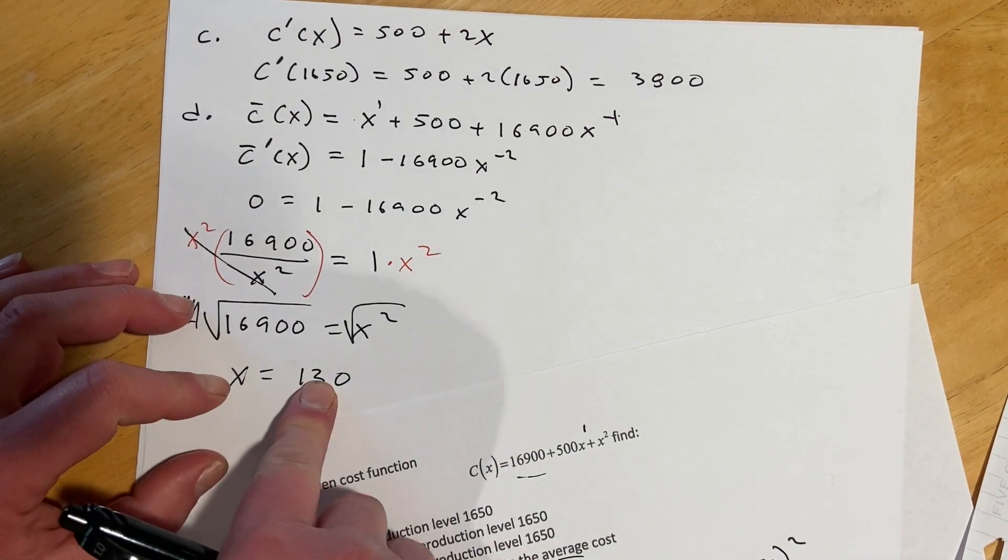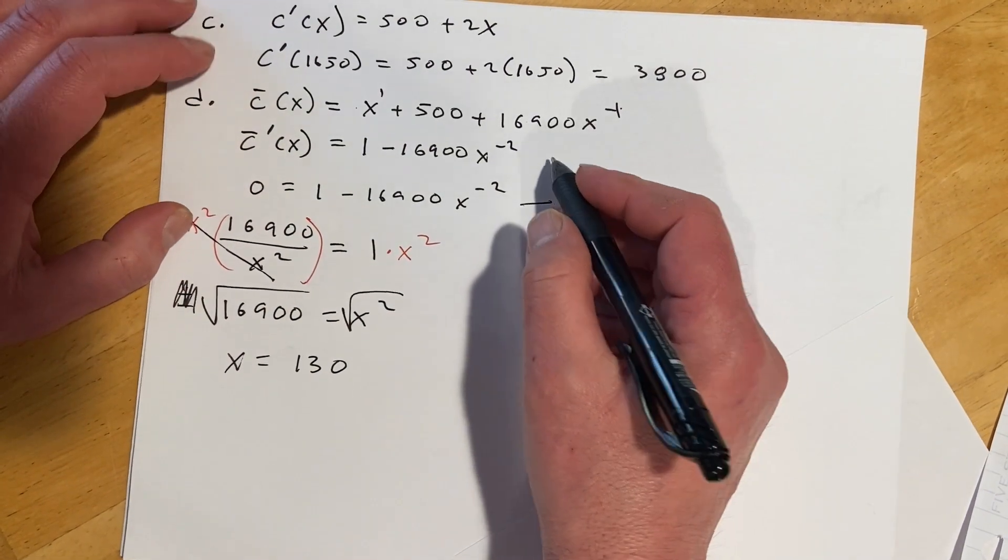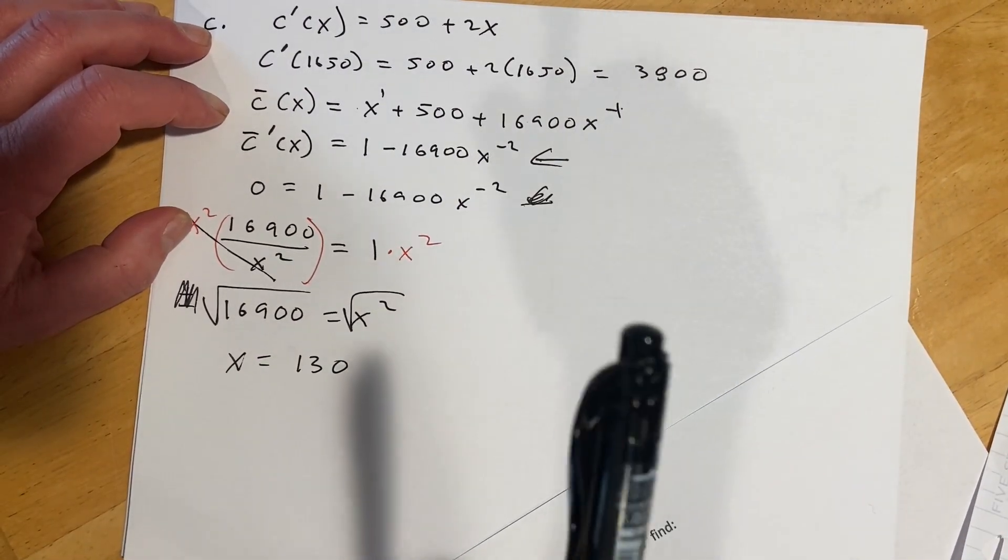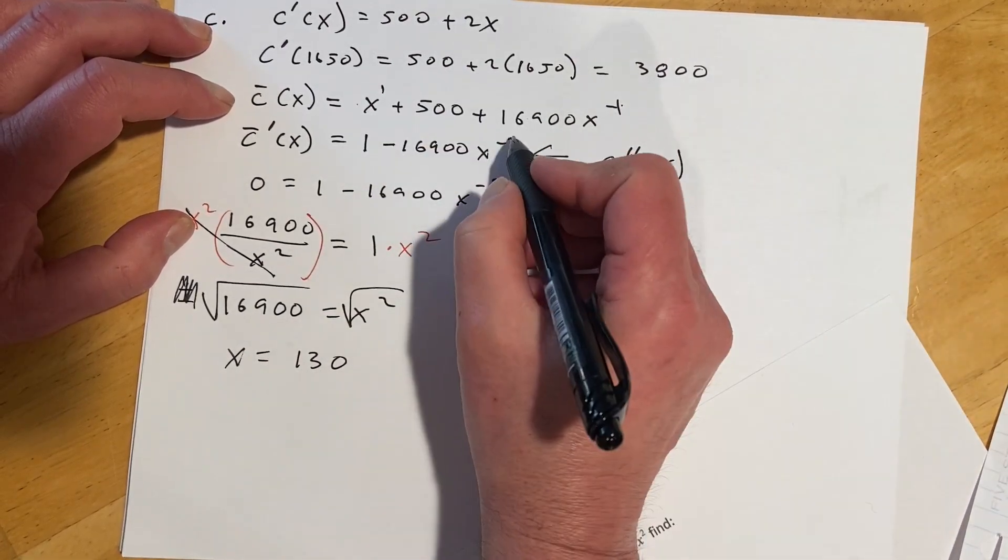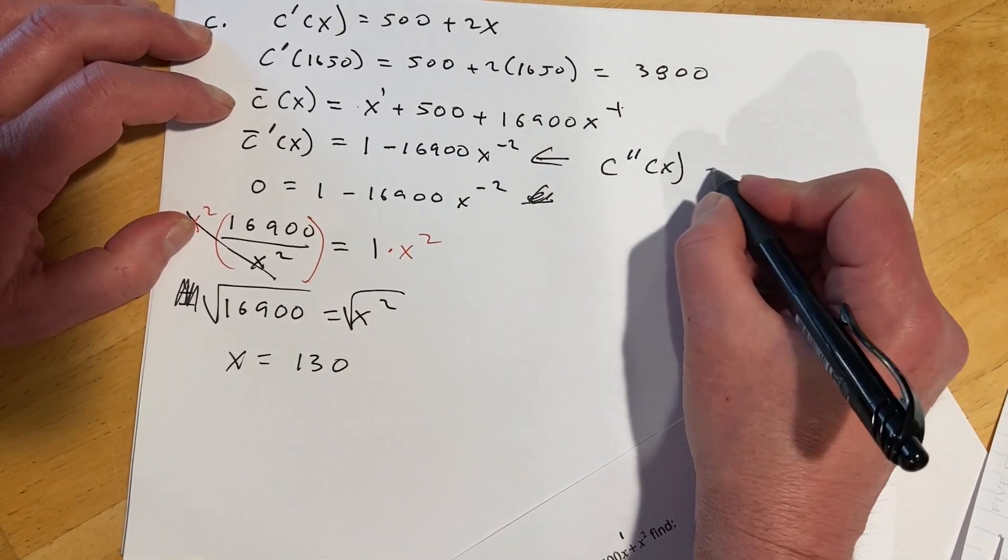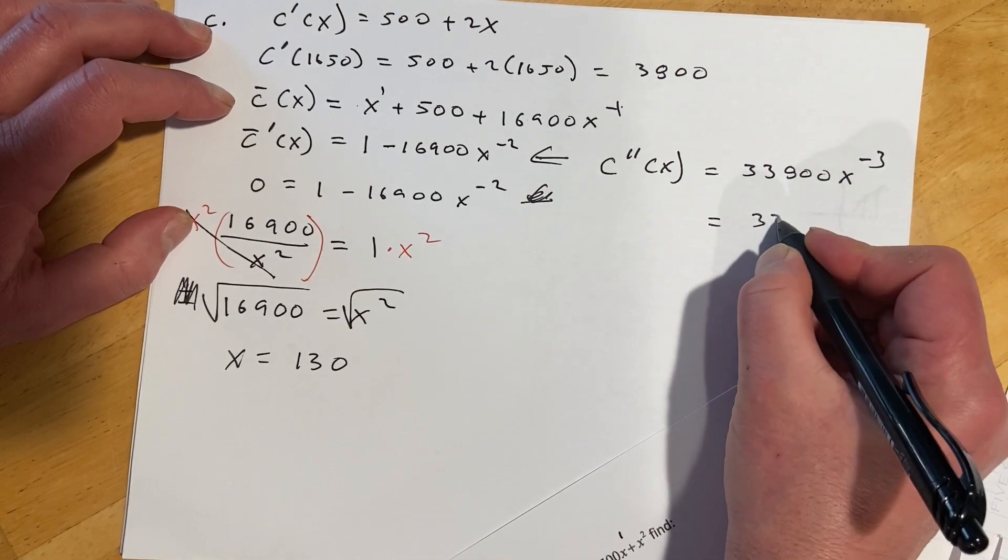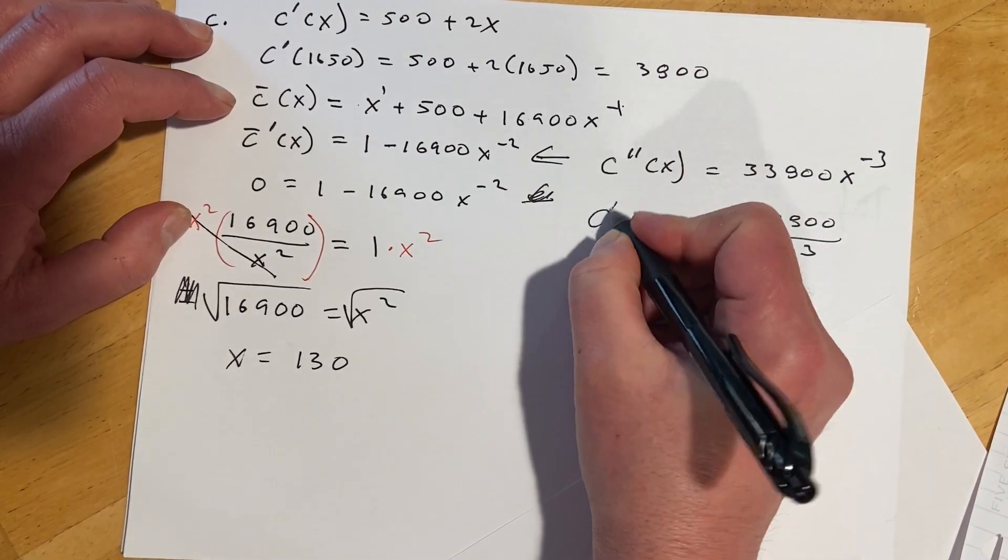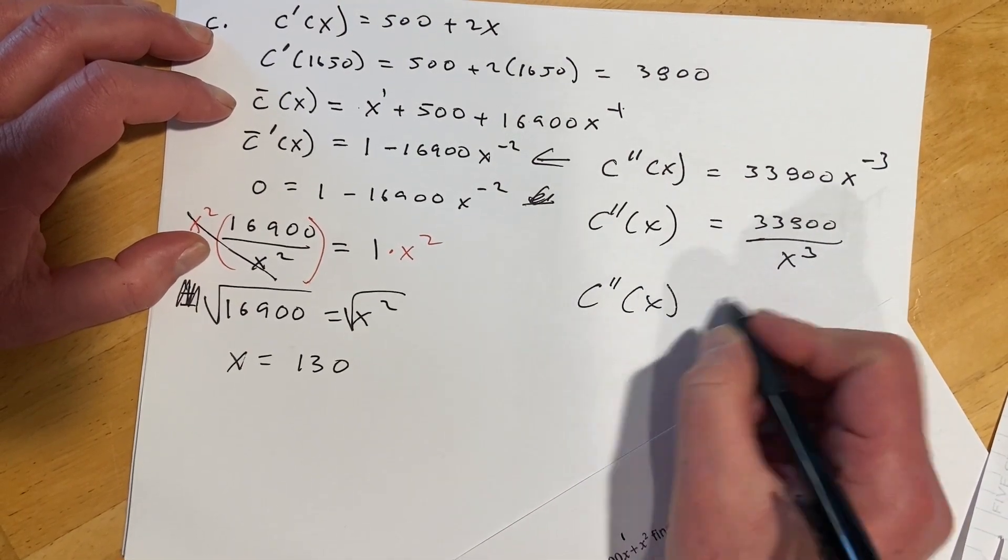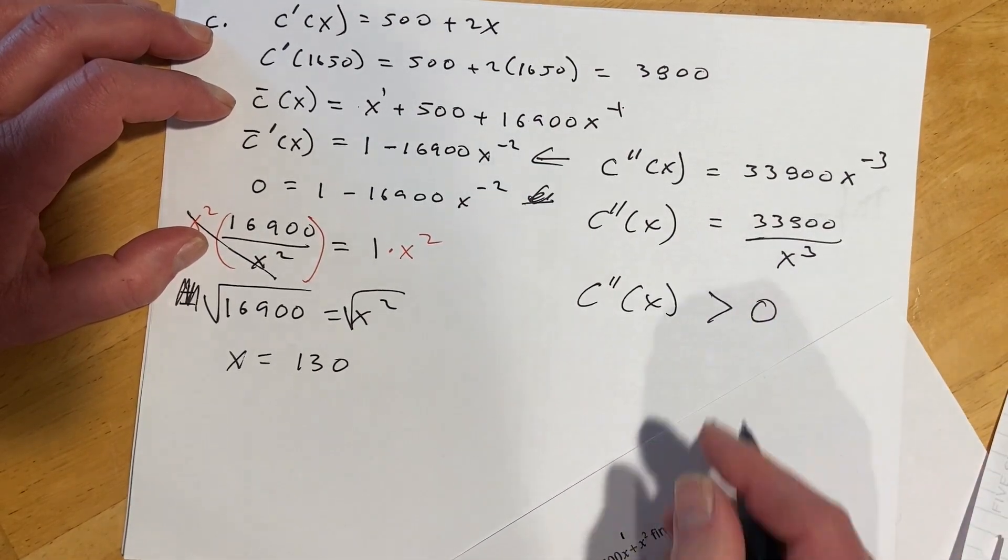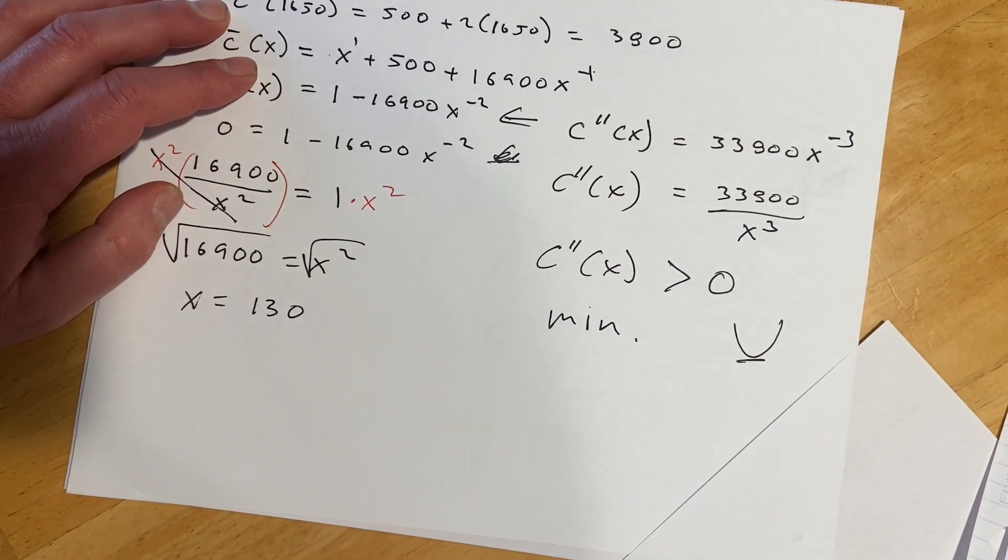And so then the other thing is, so great, I found this is a turning point on the graph. But it could be a min or it could be a max. So I need to do the second derivative test right here, right there. And then see if I have a maximum or a minimum. So taking my second derivative, the 1 would drop out. Negative 2 times negative will make positive. And then 2 times that value comes out to 33,800. And then take another one off the exponent, and that gets us to X to the negative 3. Or you can think of this as this. And that's our second derivative. So now if I put our units produced in, you can see that C, this is going to be a positive value. So this is greater than 0. And when it's greater than 0, that means it's concave up. And that means we have our minimum.